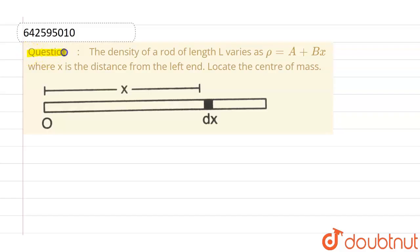Hello everyone. If we talk about this question, this given question is the density of a rod of length L varies as rho equals to a plus bx, where x is the distance from the left hand. We have to locate the center of mass of this particular rod.